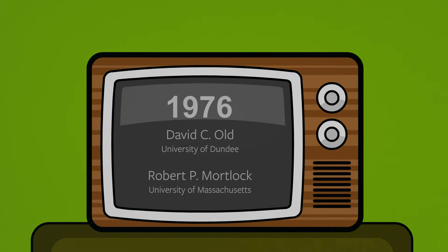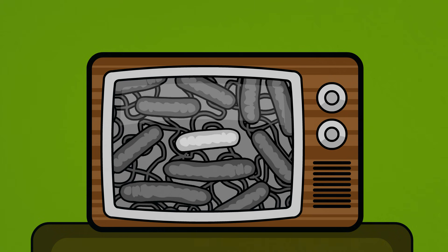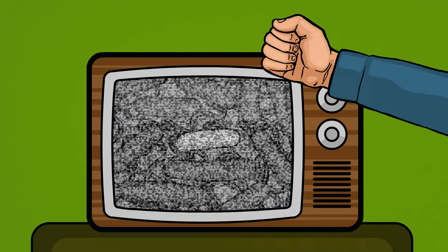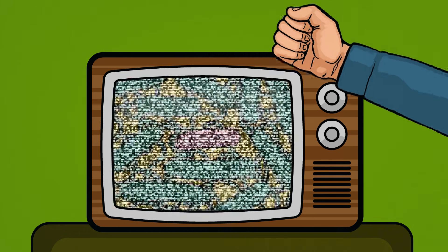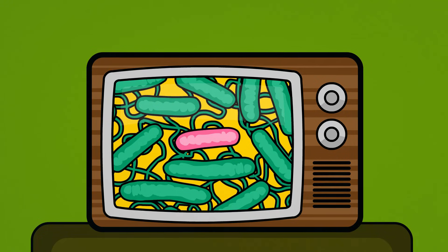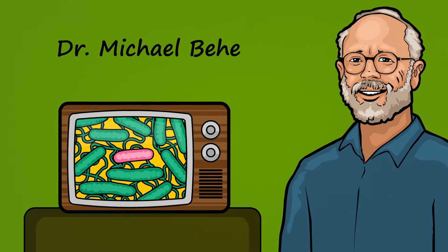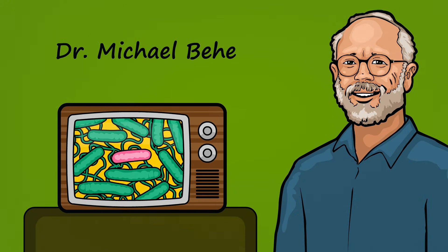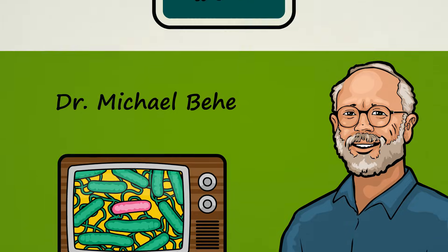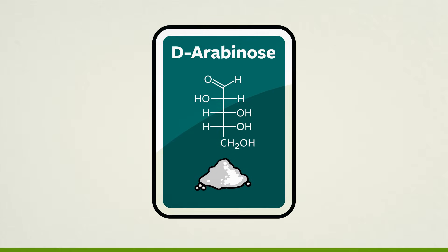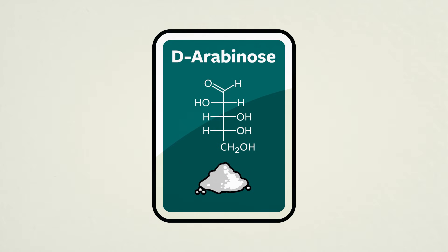Back in 1976, two scientists reported a strange mutation in Salmonella that occurred in one of their labs. Their work was recently evaluated by Dr. Michael Behe, who classified their discovery as a rare gain-of-function mutation. The mutation gave these microbes the brand new ability to detect and then eat a rare sugar called D. arabinose.